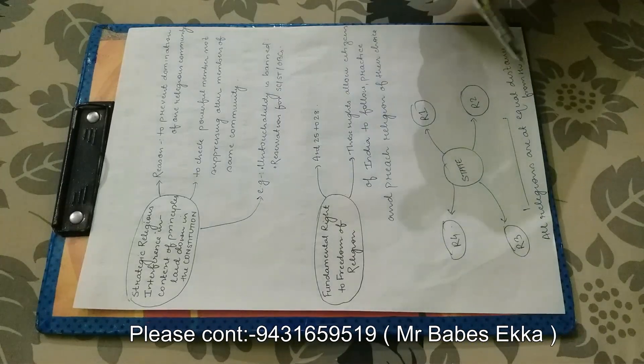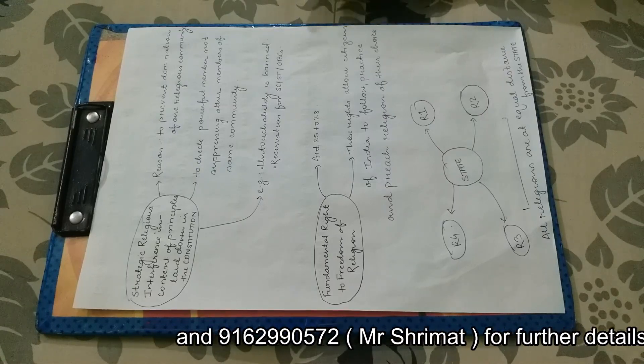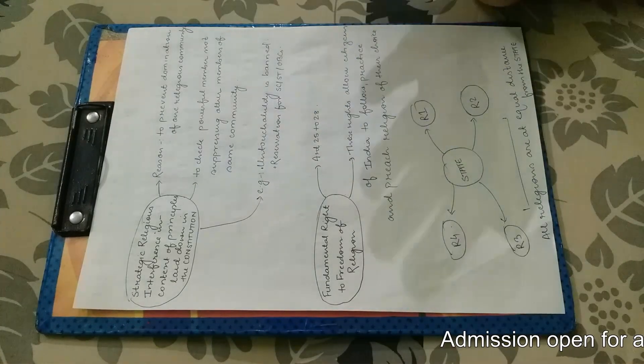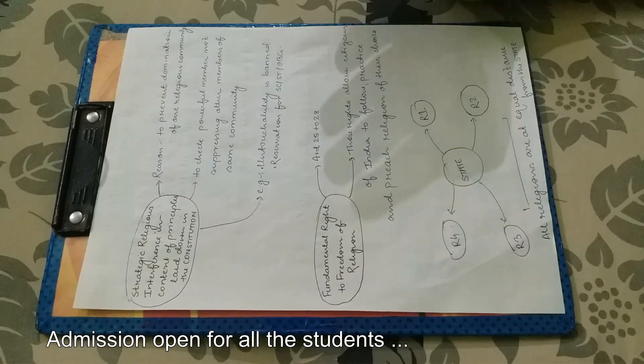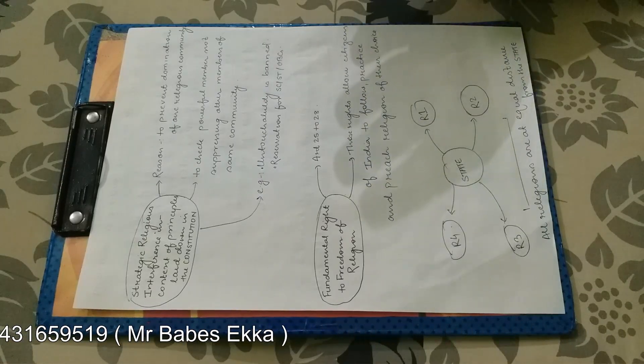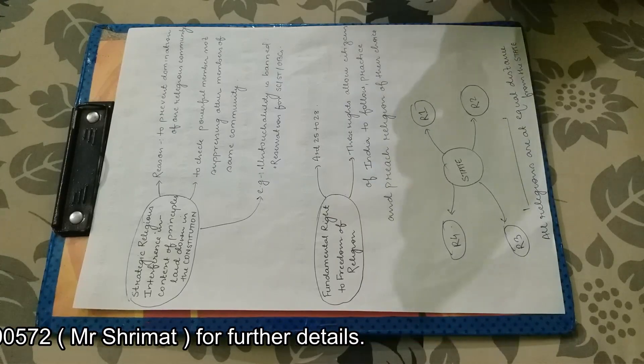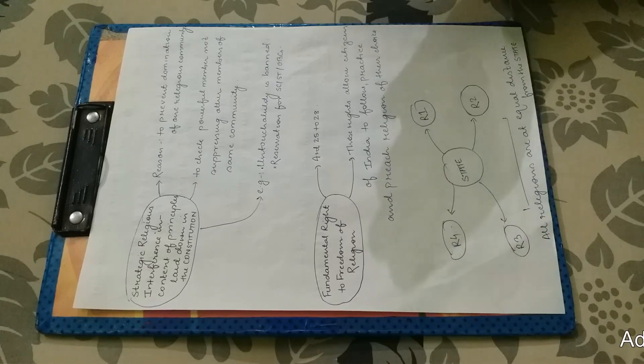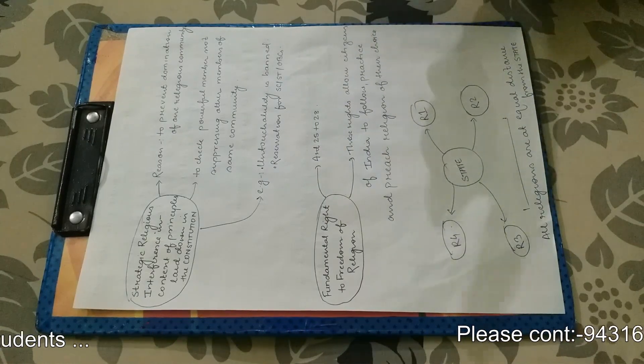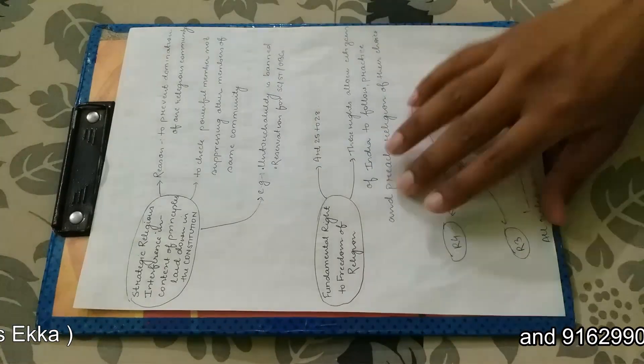That is every religion is being treated equally by our state. That is all religions are at equal distance from the state and they are not discriminated on the basis of a particular religion or the religious group they belong to. There should not be any problem. India is a secular country and no religion is preferred over any other religion when it comes to state. State believes that we don't believe in any religion and every religion is at equal distance and every religion should be treated equally by the state.